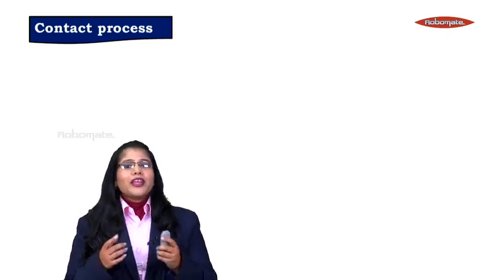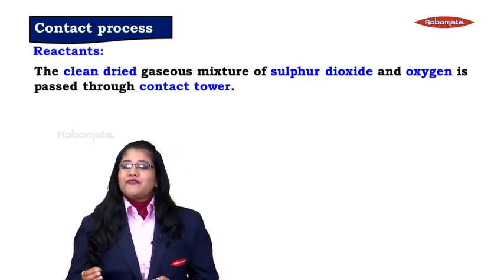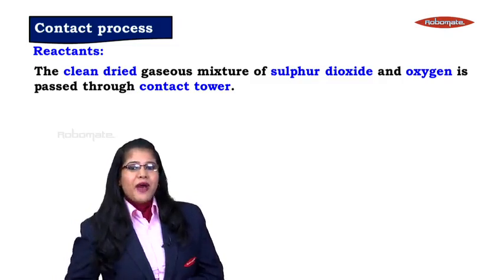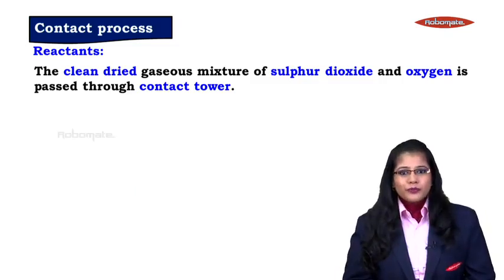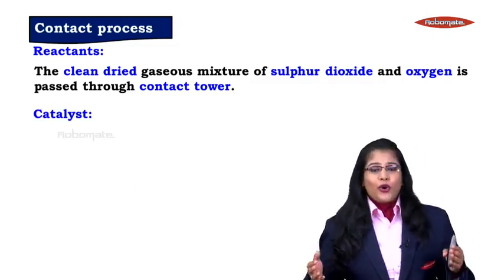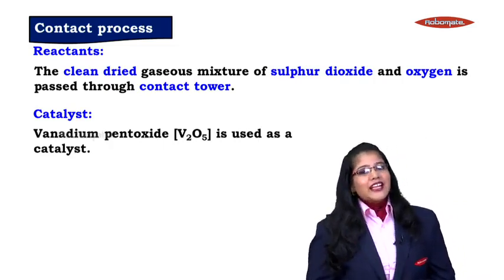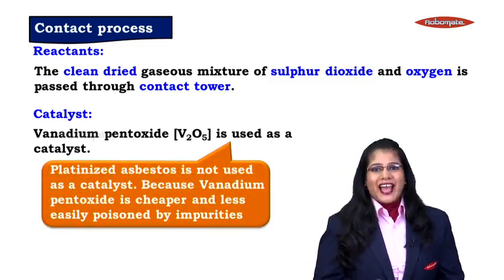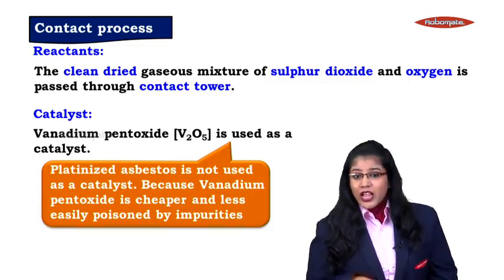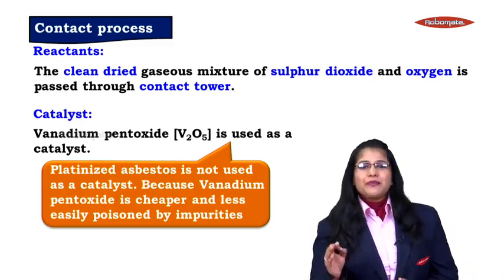Now let us begin with the main process, that is the contact process. The main reaction is: a clean and dry gaseous mixture of sulphur dioxide and oxygen is passed through the contact tower. That is SO2 reacts with O2 to form SO3. This reaction is not very feasible and hence we require a catalyst to increase the speed of the reaction. The catalyst used is vanadium pentoxide. We can also use platinized asbestos as a catalyst, but it is not preferred.